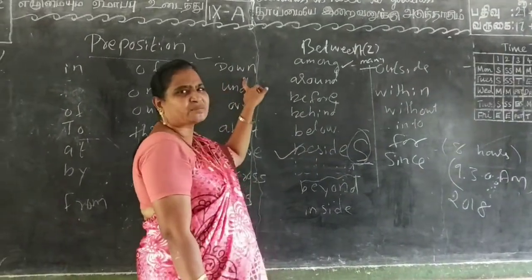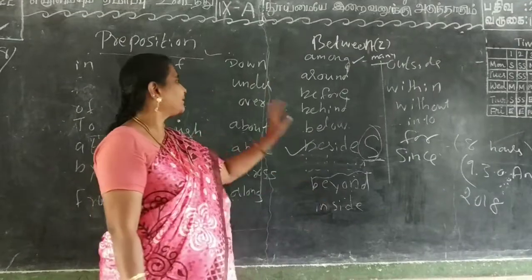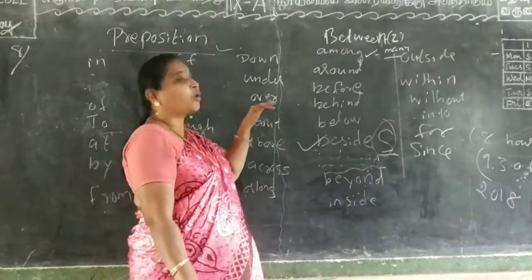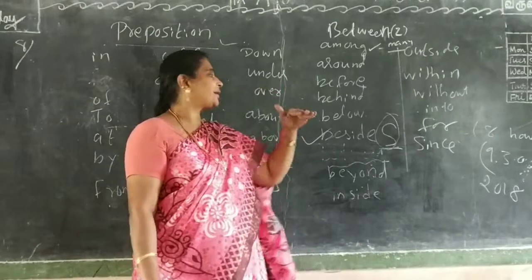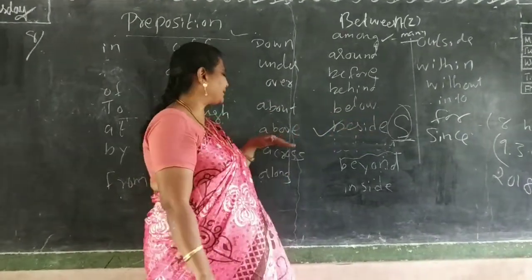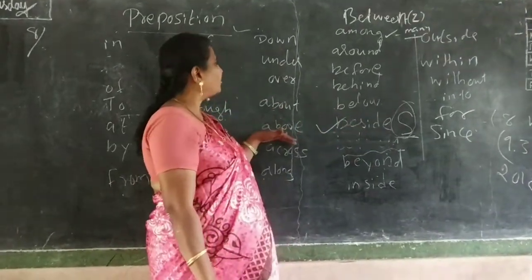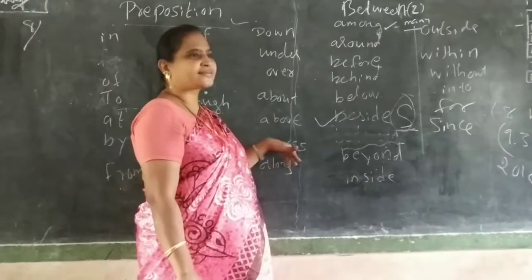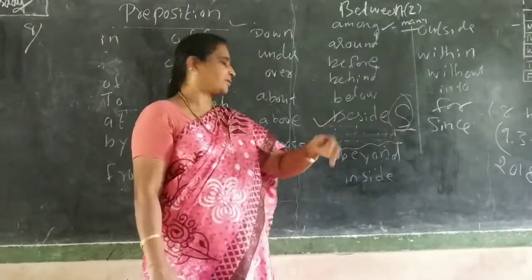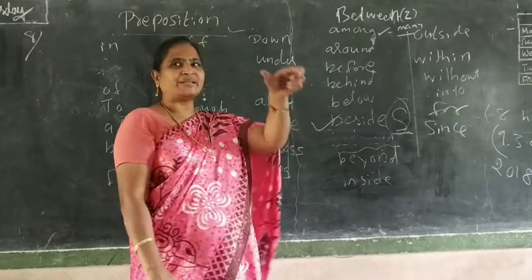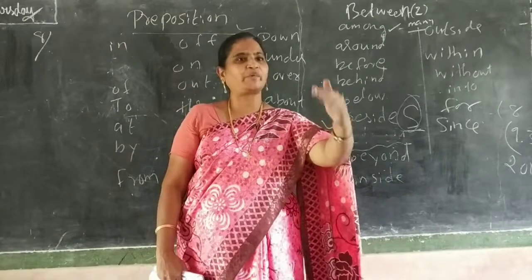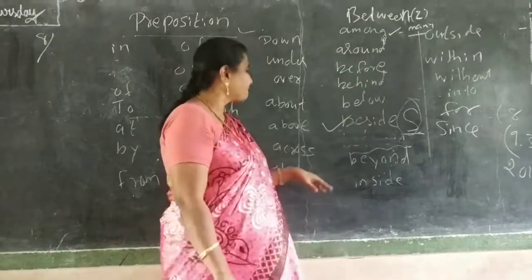Down — what is below you? Under, over, about — 'about' means regarding something or someone. Across, along — for example, there is a river, so go along the river. These are the important prepositions to remember.